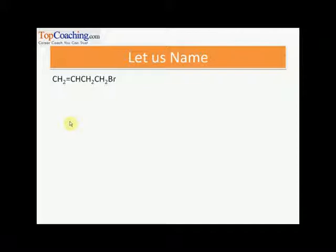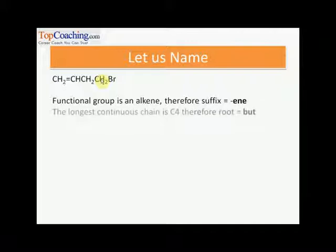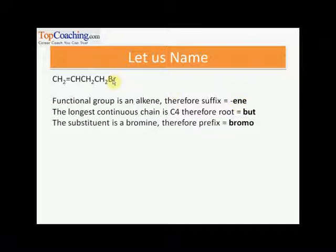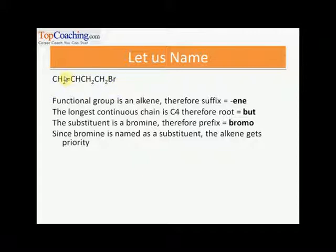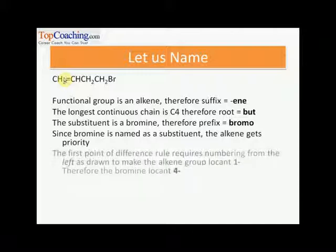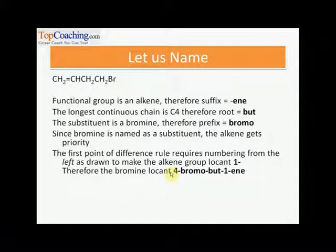Let us get into the actual naming of alkenes. For CH₂=CHCH₂CH₂Br: there are four carbon atoms, so the root is 'but-'. The functional group is an alkene, so the suffix is '-ene'. The substituent is bromine, so the prefix is 'bromo'. Since the alkene is the main group, it gets priority in numbering — one, two, three, four — and bromine gets number four. The IUPAC name is 4-bromobut-1-ene.